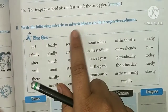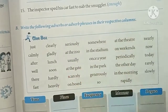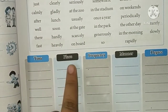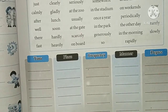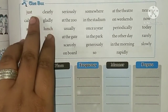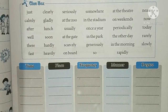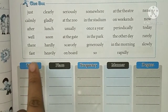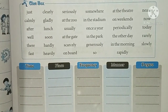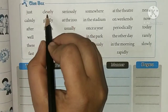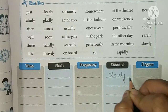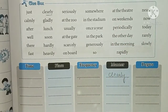Exercise B: Write the following adverbs or adverb phrases in the respective columns — time, place, frequency, manner, and degree. Read each word from the table and find which category it belongs to. For example, 'clearly' — is it time, place, frequency, manner, or degree? 'Clearly' goes under manner. Do the rest in the same way.